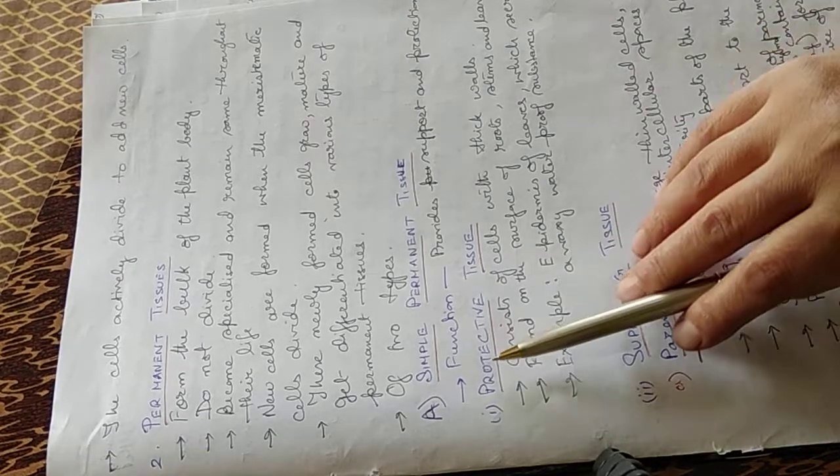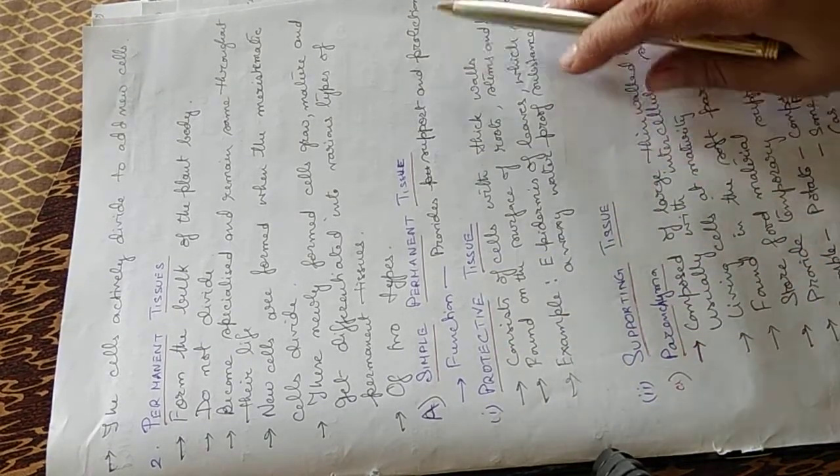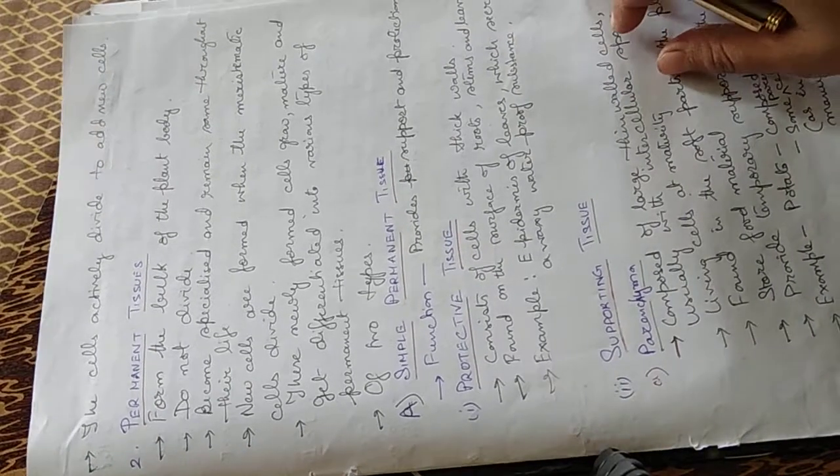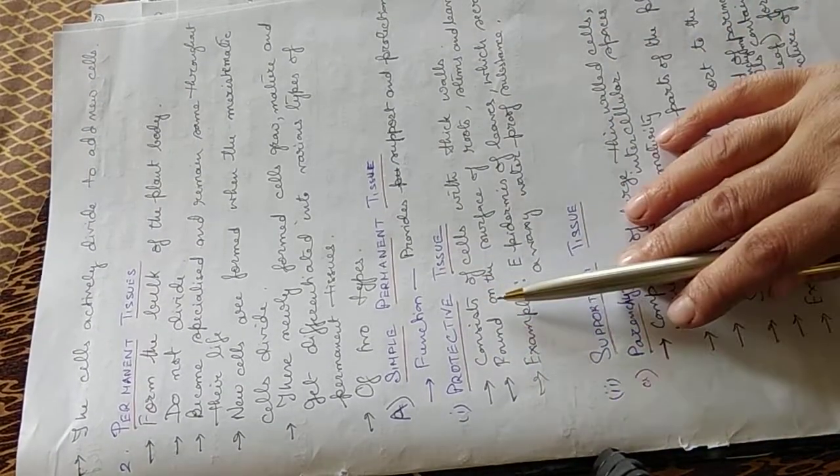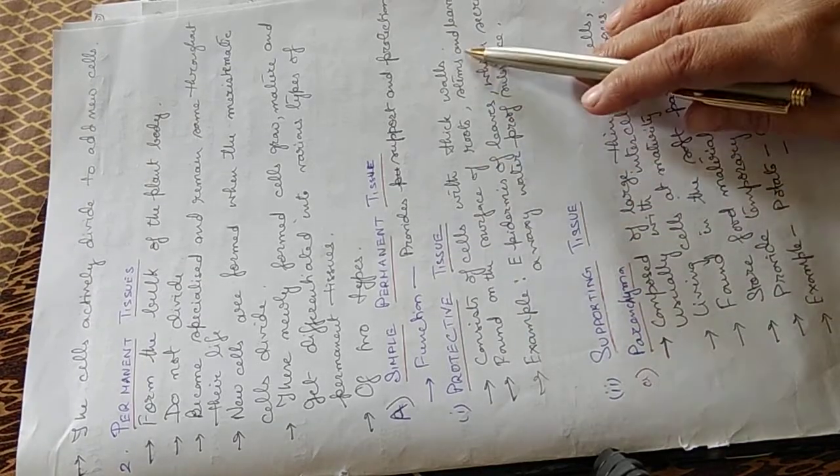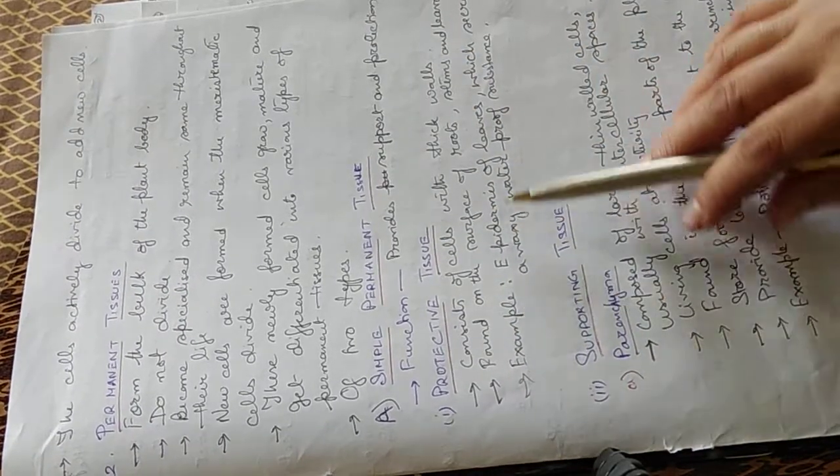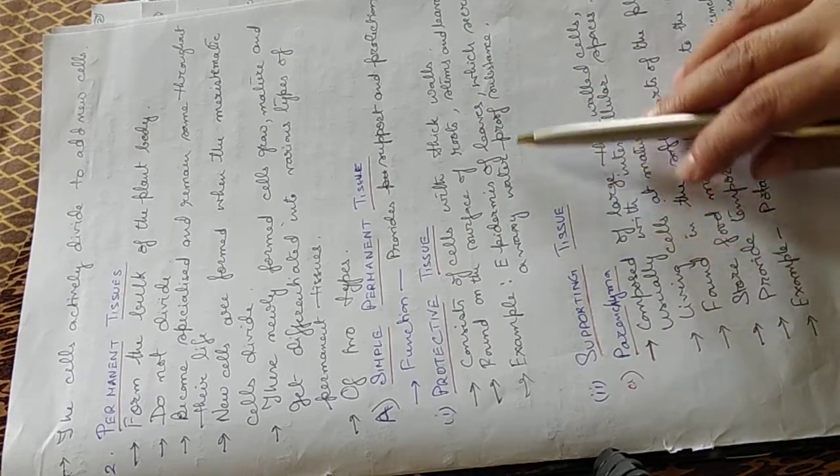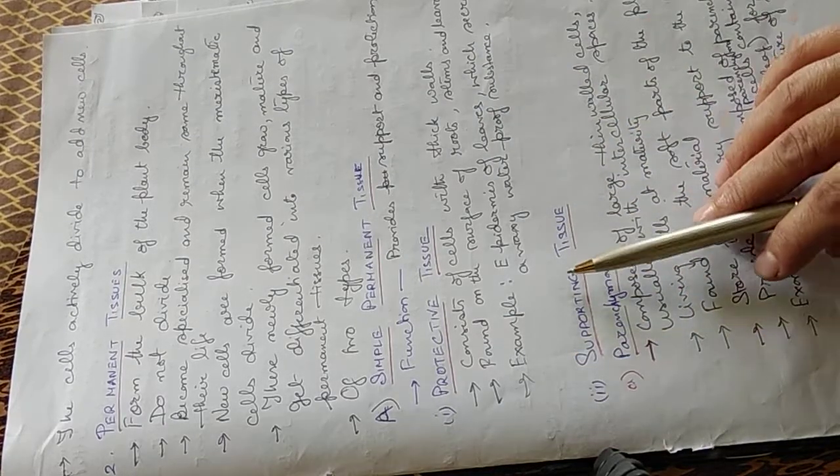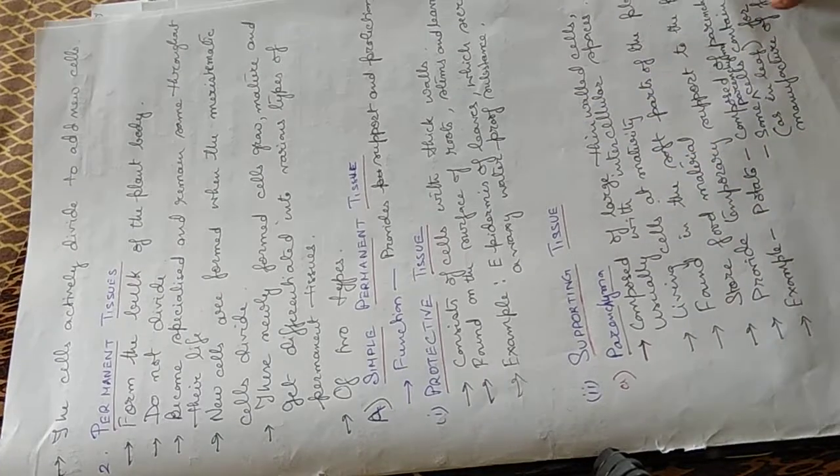Simple permanent, their function is to provide support and protection. They are of different types like protective tissues. They consist of cells with thick walls. They are found on the surface of the roots, stems, and leaves. For example, epidermis of the leaves, which secrete a waxy, waterproof substance.